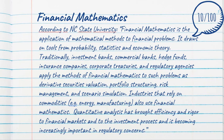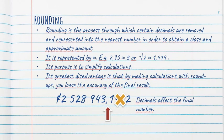Industries that rely on commodities, for example, the energy companies, the manufacturing companies, also use financial mathematics. Quantitative analysis has brought efficiency and rigor to financial markets and to the investment process, and it is becoming increasingly important in regulatory concerns. Financial mathematics is basically everything that rules us nowadays.